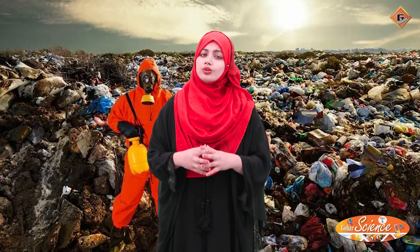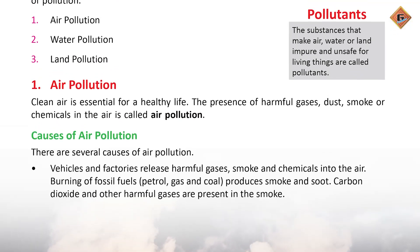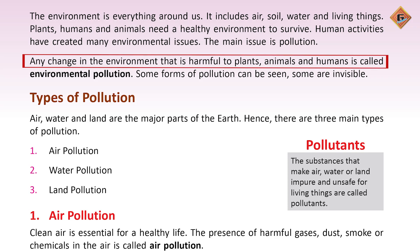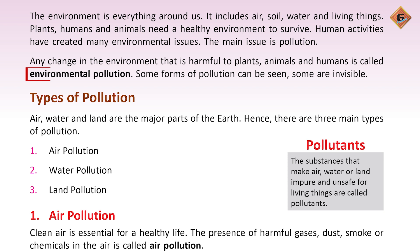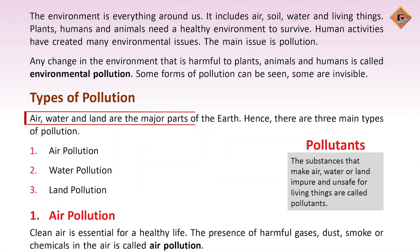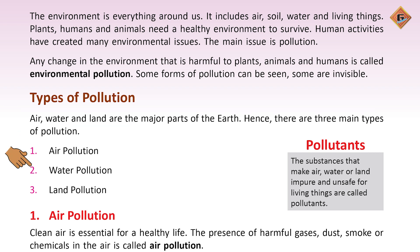Toh students, aaj hum apni book pe pollution aur uski types ke baare mein padhenge. Page number 48 pe dekhte hain — pollution kiya hota hai: 'Any change in the environment that is harmful to plants, animals and humans is called environmental pollution.' Yaani ke jo bhi aisa change jo hamare liye harmful ho, woh environmental pollution kehlata hai. Iski teen major classes hoti hai jis mein air pollution, water pollution aur land pollution aati hai.